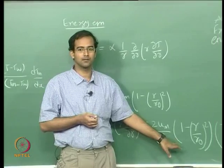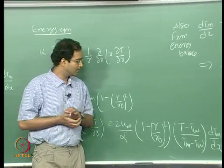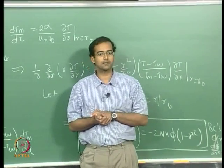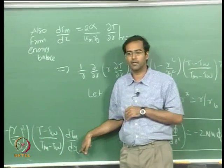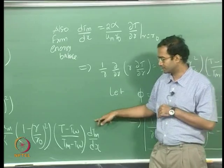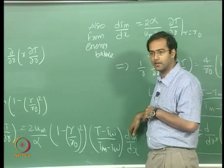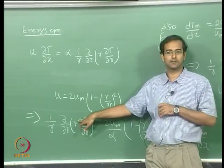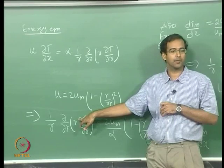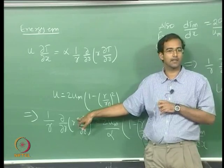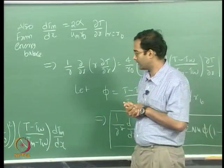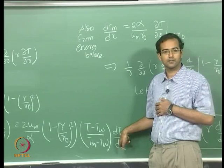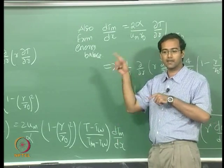Now, what is the problem with this? Unlike the case of constant wall flux boundary condition, where DT_M/DX was a constant — so this side was not there, you had only DT_M/DX, and on the other side T as a function of R, so you could directly integrate and find the temperature profile with respect to R and apply the boundary condition. That was very straightforward. Now, DT_M/DX is not a constant; it is changing and we do not know exactly how it is changing.